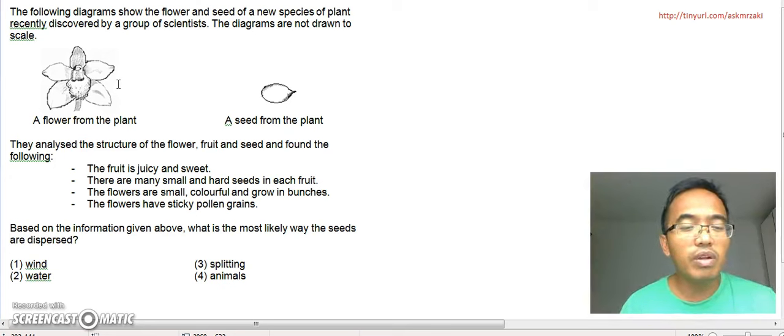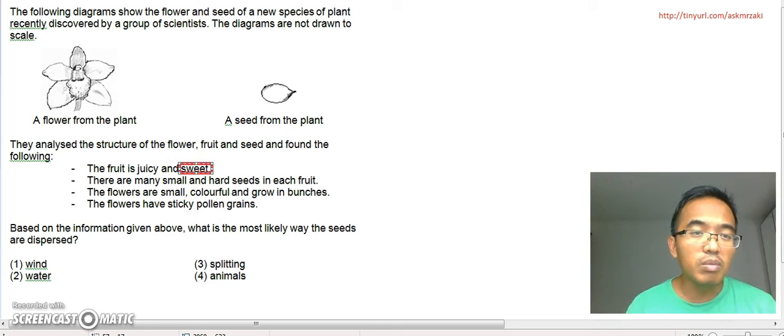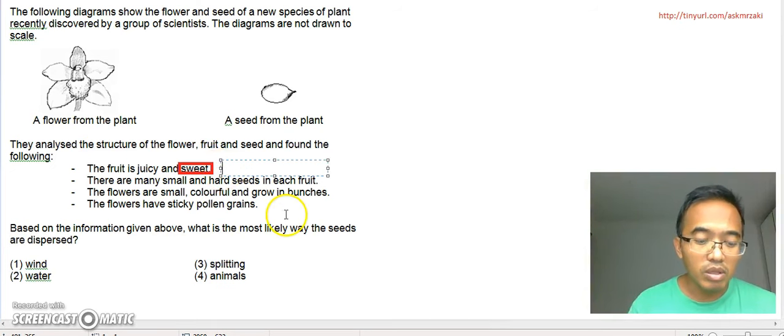So they analyzed the structure of the flower, fruit and seed and found the following. The fruit is juicy and sweet. So usually only animals can taste sweet. If it's juicy and sweet, that means it must be meant for animals, right? Because only animals can taste the sweetness.